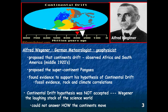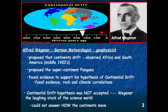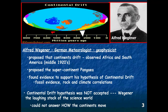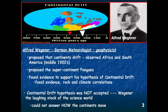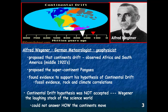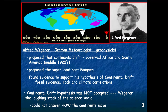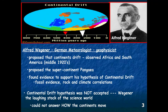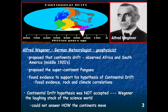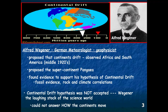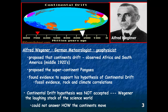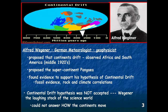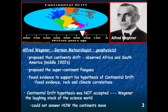Based on that simple observation, Alfred Wegener set out to look for evidence to show that, in fact, at one time South America and Africa were together. He found evidence in the way of fossil evidence, rock and climate correlations. He proposed, based on his research and fieldwork, the supercontinent of Pangaea, which existed about 250 million years ago.